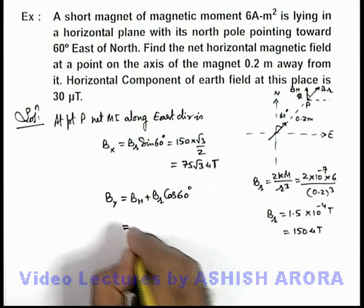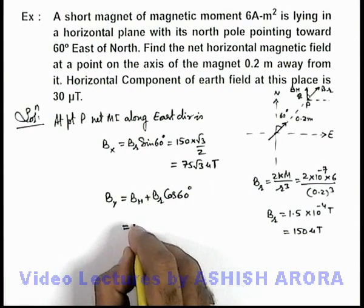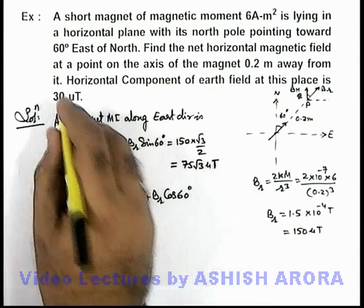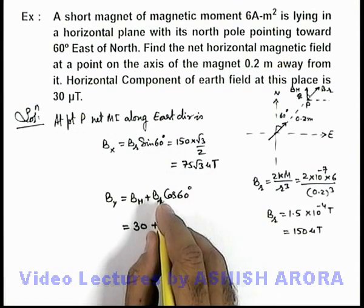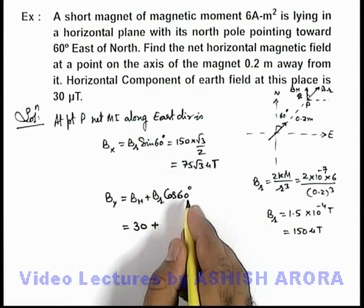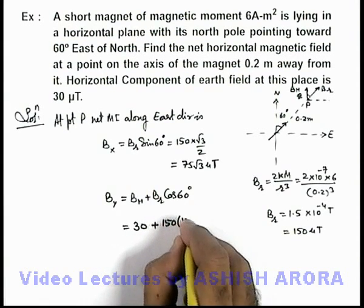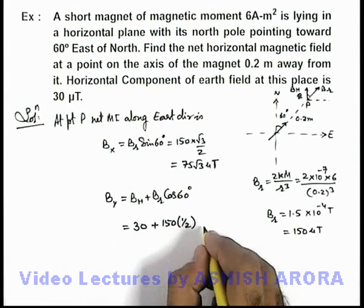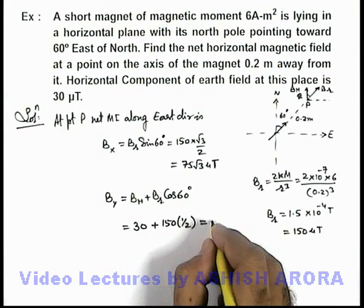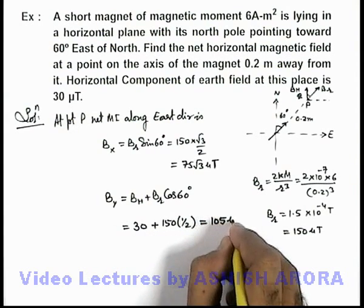So if we substitute the value, B_h we know is 30 micro tesla as given, and B_r is 150 and cos 60° is 1/2, so this will be 150 × 1/2. The result we are getting will be 75 + 30 = 105 micro tesla.